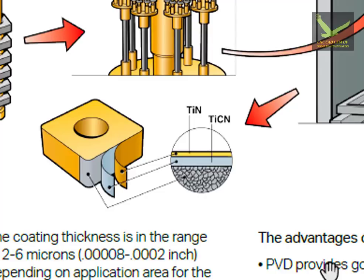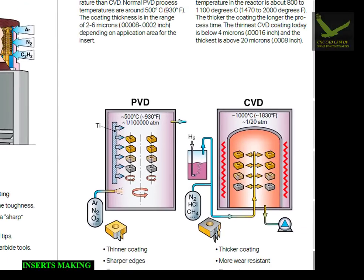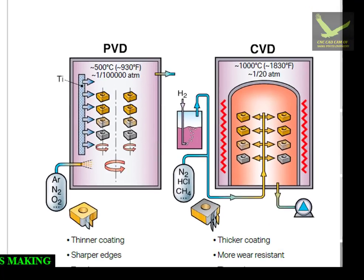This entire process happens inside a closed chamber, and the thickness is very low — between 2 to 6 microns. Physical Vapor Deposition makes the insert tough, and sharp cutting edges are developed. That is, inserts with the smallest nose radius are developed through the PVD method.